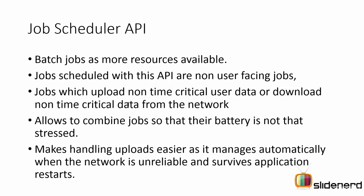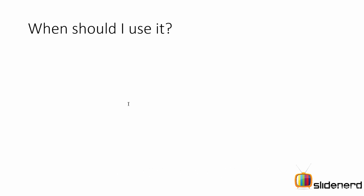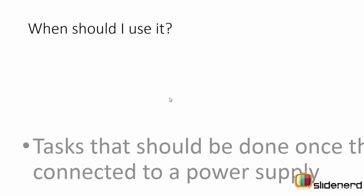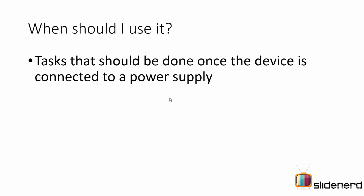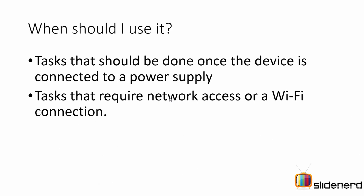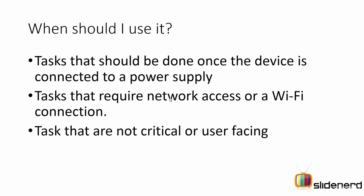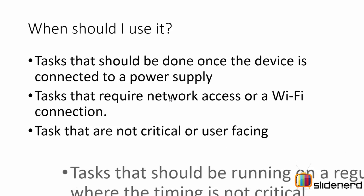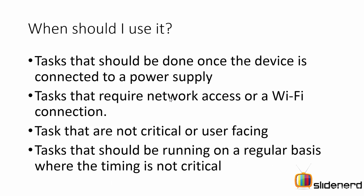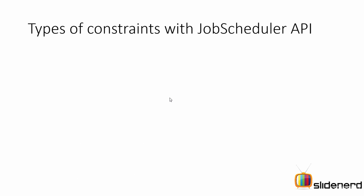So let's take a look at what kind of stuff can happen with the Job Scheduler — when to use it. First, the task you want to run should require the battery supply. Or you want to ensure that you run the background task when there is network or Wi-Fi access. Or the user does not interact with the task. And most importantly, you want to run something again and again every 20 minutes and timing is not that critical.